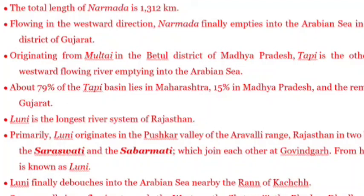The river flowing through Rajasthan is the Luni river. The Luni originates in the Pushkar valley of the Aravalli ranges. In Rajasthan it splits into two branches — Saraswati and Sabarmati — which join each other at Govindgarh, and from there the river is known as Luni. Finally, the Luni debouches — meaning joins — into the Arabian Sea near the Rann of Kutch.